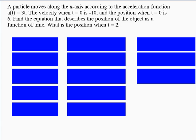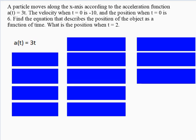A particle moves along the x-axis according to the acceleration function a(t) = 3t. The velocity when t = 0 is negative 10, and the position when t = 0 is 6. We want to find the equation that describes the position as a function of time, and then find the position when t = 2. We start with acceleration and work our way to position.